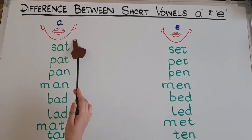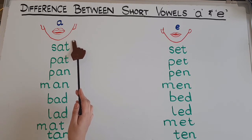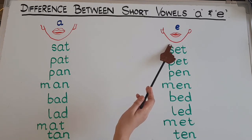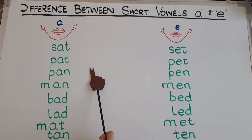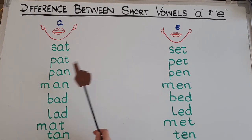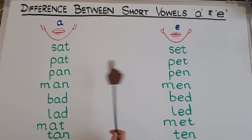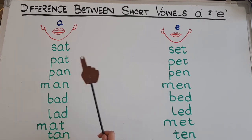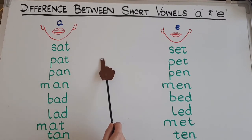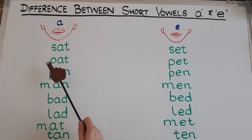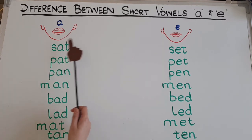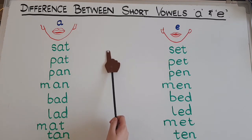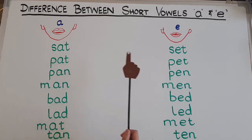To say the A sound, almost two-thirds of your mouth gets open. To say the E sound, only one-fourth of your mouth is opening. With just a small difference in pronunciation, the word and its meaning changes a lot. So try to work on this, repeat these words, and practice the sounds of A and E. Once you get it, you will get it forever.